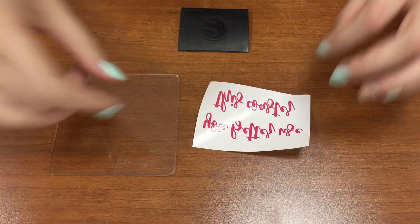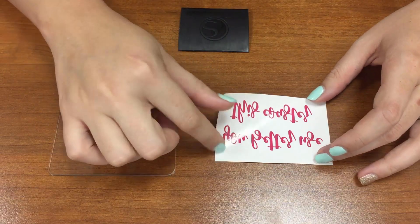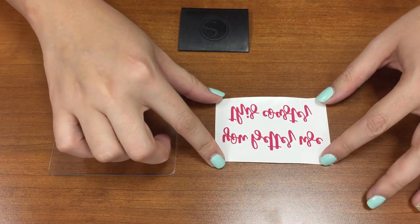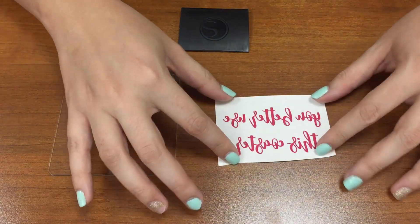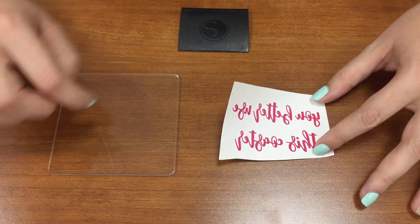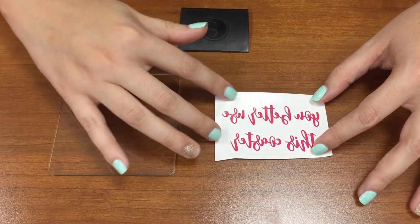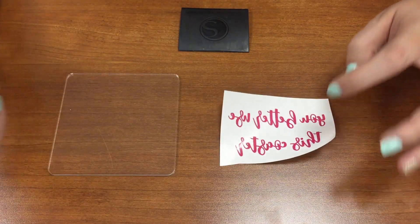I've got the acrylic part of my coaster here. Here is my design cut out in our FDC sign vinyl. You'll notice that it's mirrored. The reason why is we're going to apply this to the back side of the coaster. That way water condensation doesn't get on it and you'll be able to see it through the clear acrylic.